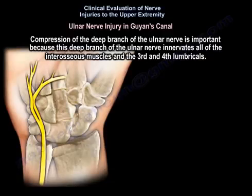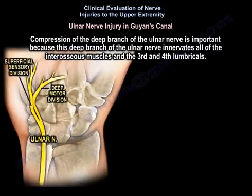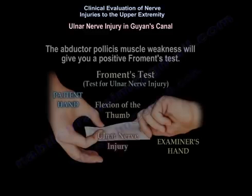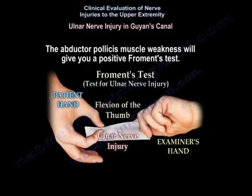Compression of the deep branch of the ulnar nerve is clinically important because this branch innervates all of the interossei muscles, the third and fourth lumbricals, the hypothenar muscles, the adductor pollicis muscle, and the deep head of the flexor pollicis brevis. Weakness of the adductor pollicis will give a positive Froment's test.